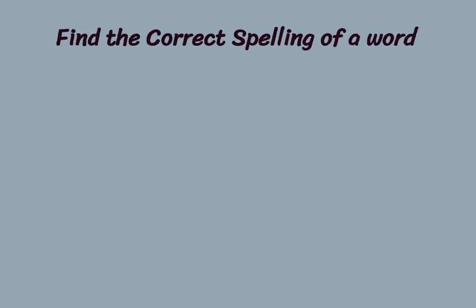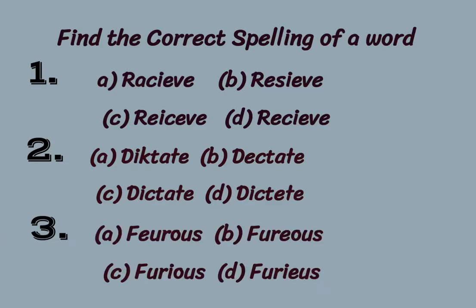This video starts with the section 'find the correct spelling of a word.' All three questions are on your screen. In the first question, you have to find the correct spelling of the word 'receive.' The second is about 'dictate' and the third about 'furious.' The correct spelling of 'receive' is option D: R-E-C-E-I-E-V-E. For 'dictate,' the correct spelling is option C. And for 'furious,' the correct spelling is option C.